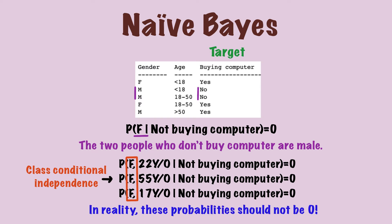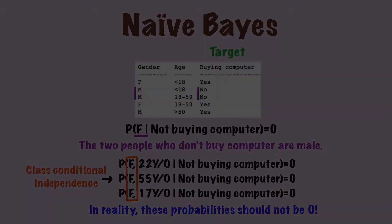The thing is, these probabilities should not be zero. In the real world, there must be some females who don't buy computer, but our database is too small to record all the possibilities. Therefore, we need some kind of method to correct this bias.